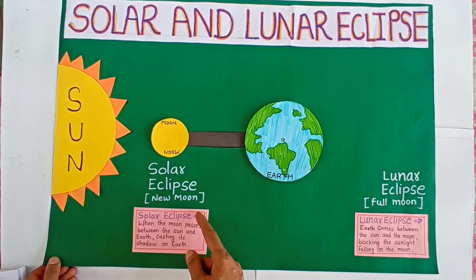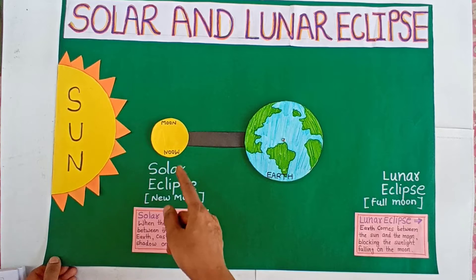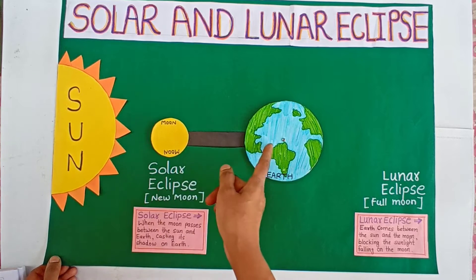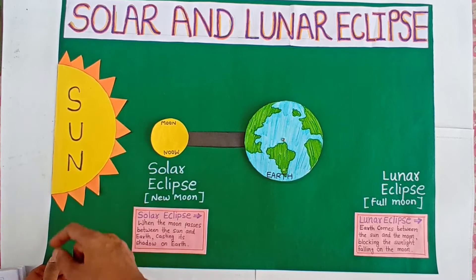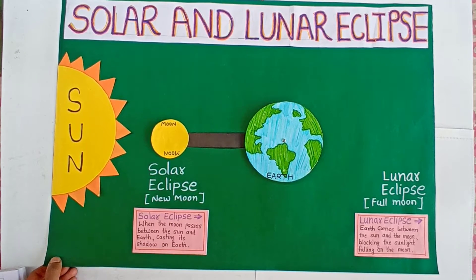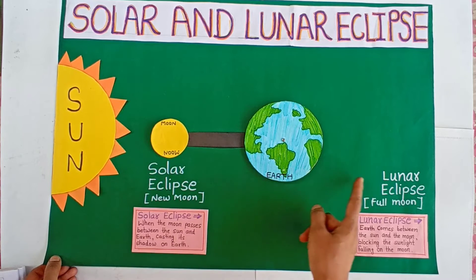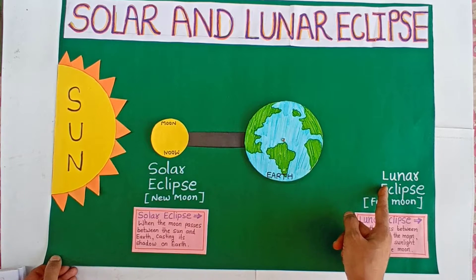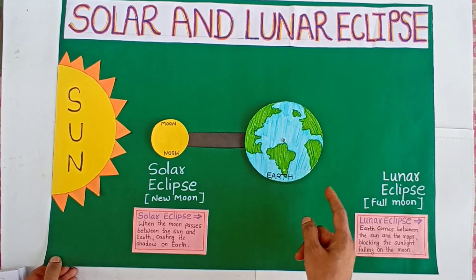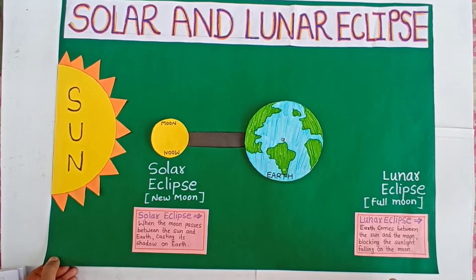A solar eclipse occurs when the moon passes between the sun and Earth, casting its shadow on Earth. Solar eclipse occurs on a new moon day and lunar eclipse occurs on a full moon day.